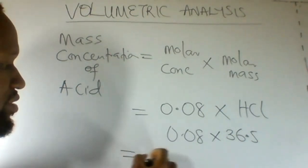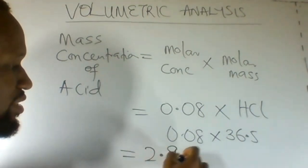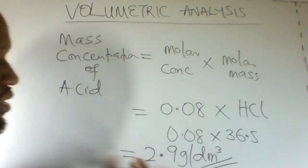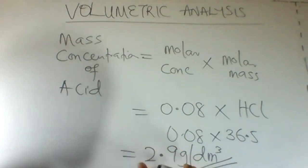Our answer there is 2.9 grams per dm cube. Therefore the mass concentration of the acid is 2.9 grams per dm cube. This answers the second part of the question.